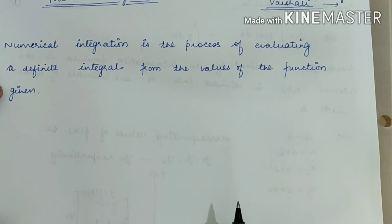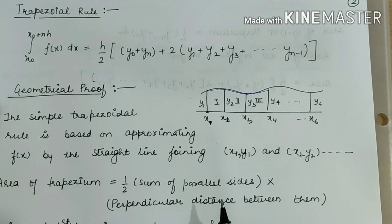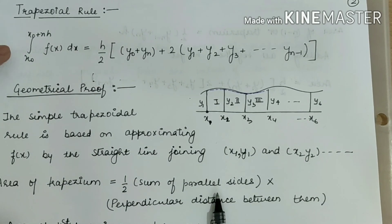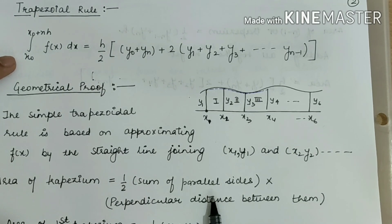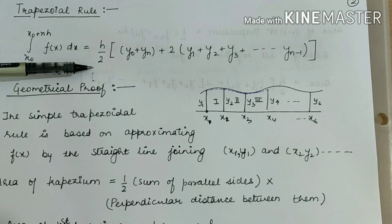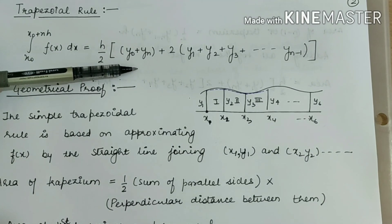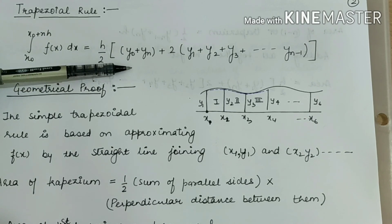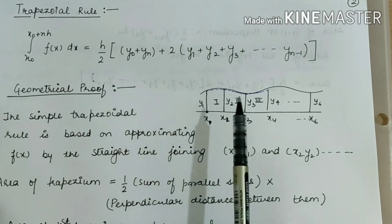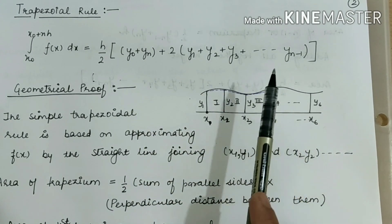Numerical integration is the process of evaluating a definite integral from the values of a function. We find those small areas and by adding them we get the total area — that is what we understand by the Trapezoidal Rule. The formula is: integral from x0 to x0+nh of f(x) dx = (h/2) × [y0 + yn + 2(y1 + y2 + y3 + ... + y(n-1))].